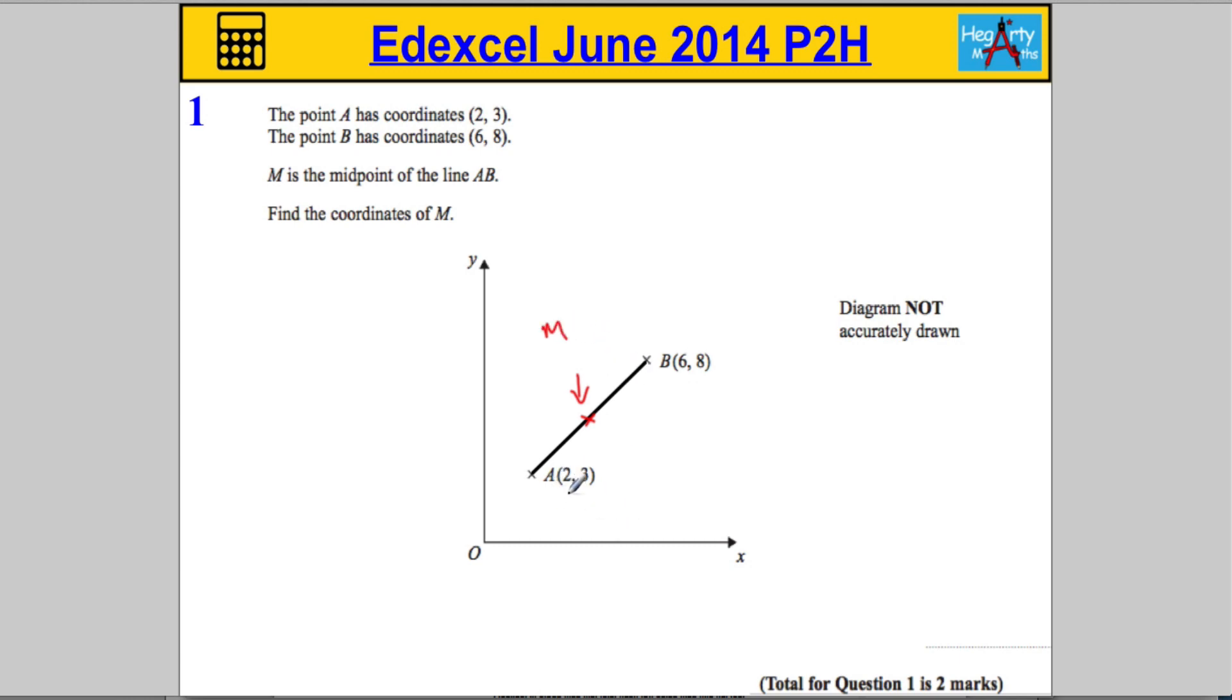Now, in order to do so, what we're going to do is find what number is halfway between the X coordinates, and then what's halfway between the Y coordinates, and then we should be good.